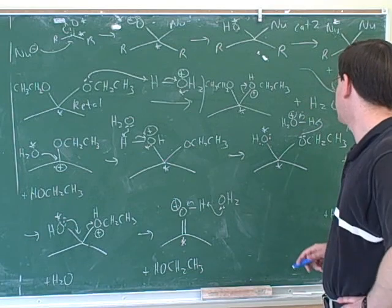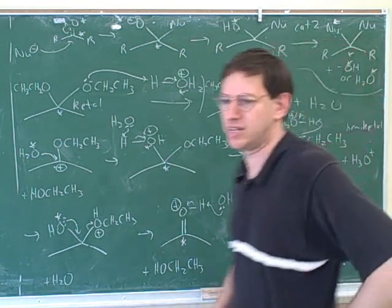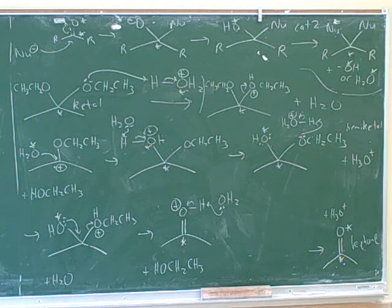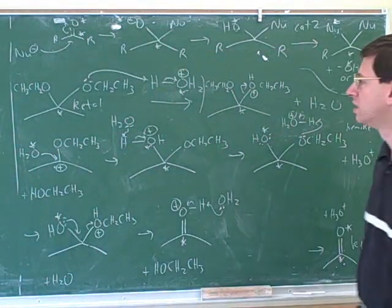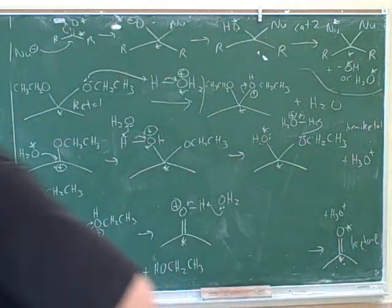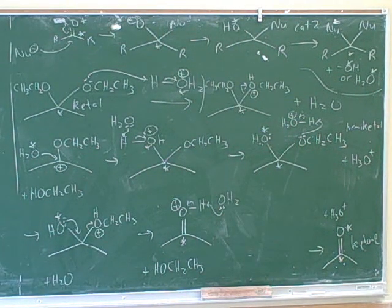Maybe that's better, although the one advantage of this is this way we got to draw the hemiketal. This way we draw the hemiketal, otherwise we would skip that. On the handout, that's basically saying that these steps can be combined, and then you just skip over the hemiketal or hemiacetal stage. You can protonate the second nucleophile at the same time as you deprotonate the carbonyl oxygen in a proton transfer.